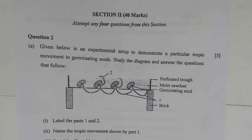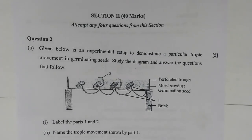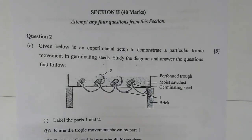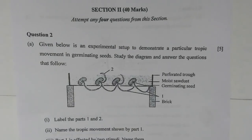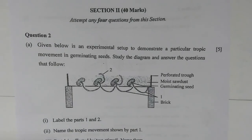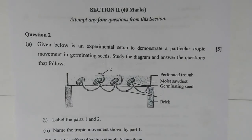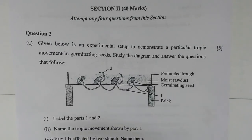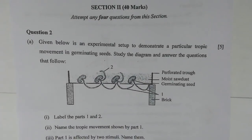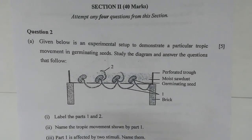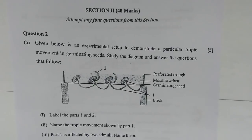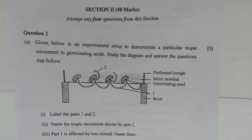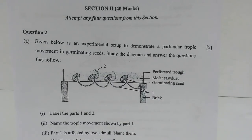Hey everyone, welcome to another video of EduCeption. In this video we solve the ICSE 2019 Biology question paper Section 2. If you like this video, hit the thumbs up button, the subscribe button, and do share it with your friends. Let's start Section 2 — 40 marks, you have to attempt any four questions, but I am going to solve all six for you.